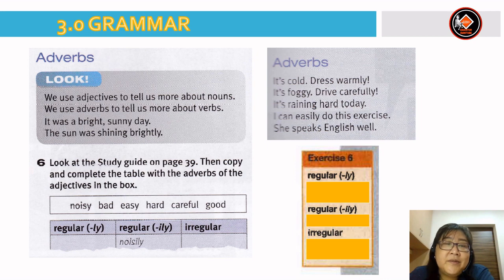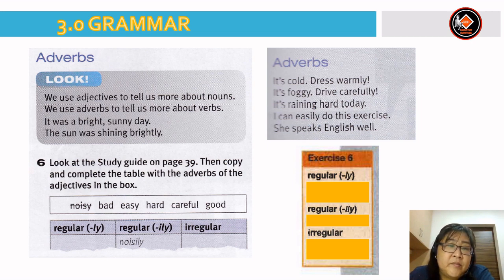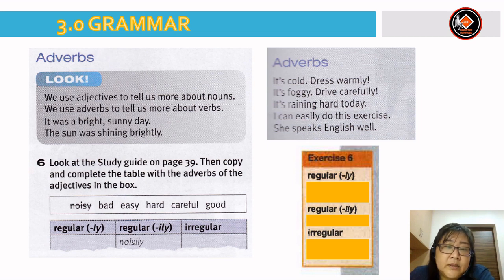Now let's move on to another grammar lesson — adverbs. We use adjectives to tell us more about nouns. We use adverbs to tell us more about verbs. For example: 'It was a bright, sunny day' — bright and sunny are adjectives describing the noun 'day'. 'The sun was shining brightly' — shining is the verb and brightly is the adverb. Now look at the study guide on page 39 and copy and complete the table with adverbs of the adjectives in the box: noisy, bad, easy, hard, careful, good.